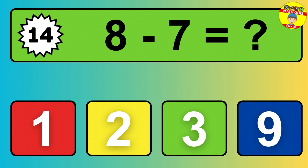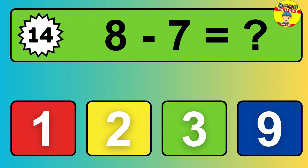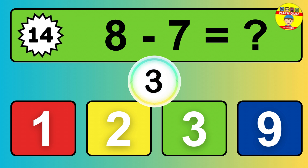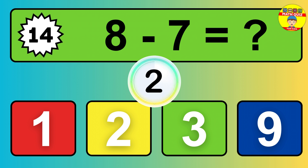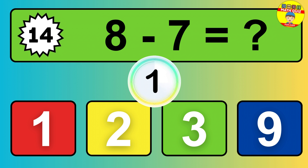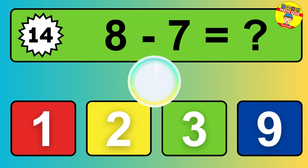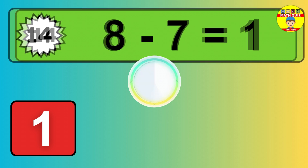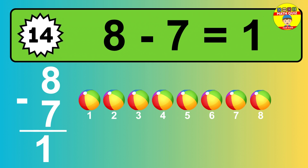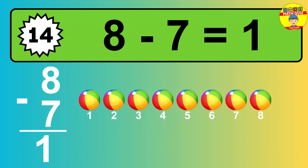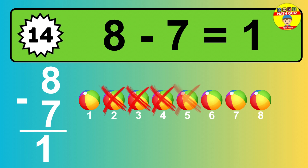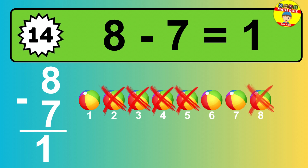Question fourteen: eight minus seven equals what? So the answer is, eight minus seven is one. Let's count it. One.